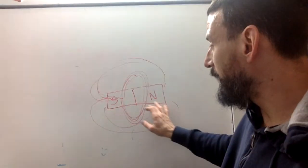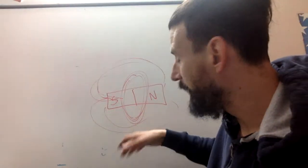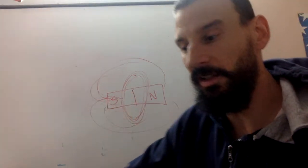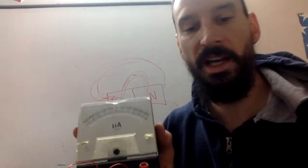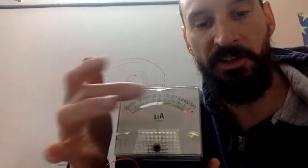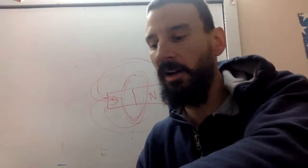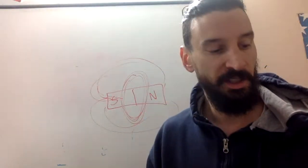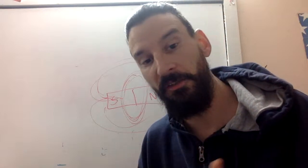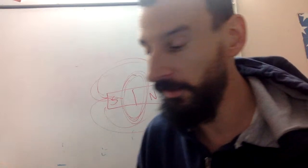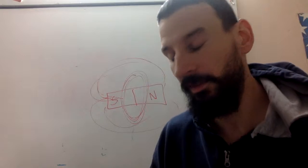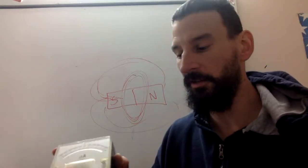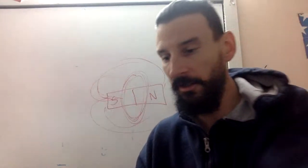The alternating magnetic field produces electric current — you can see that alternation in station one. When the meter moves back and forth, we call that alternating current, which is where AC comes from. AC versus DC — direct current from a battery. Alternating current is the current your house gets, and it's produced through generators.